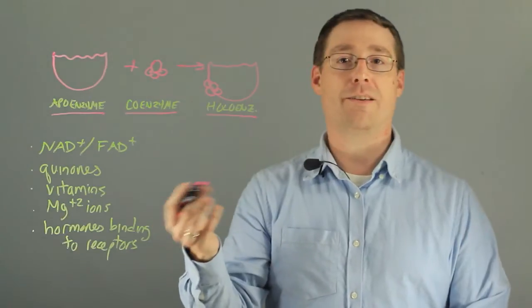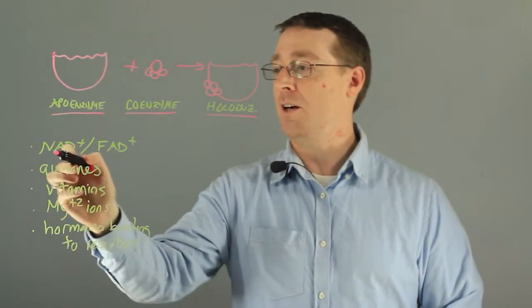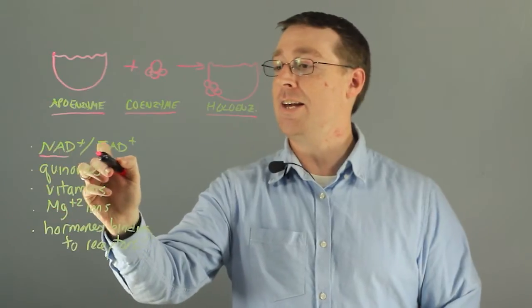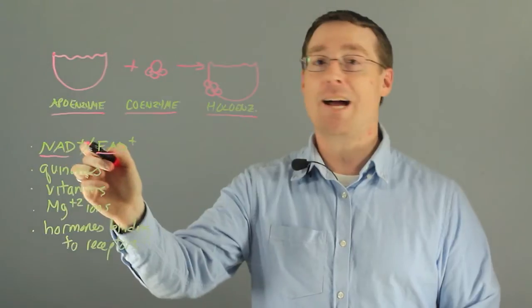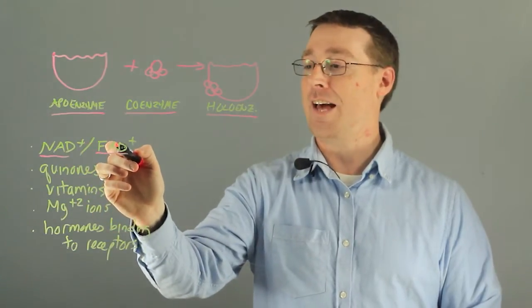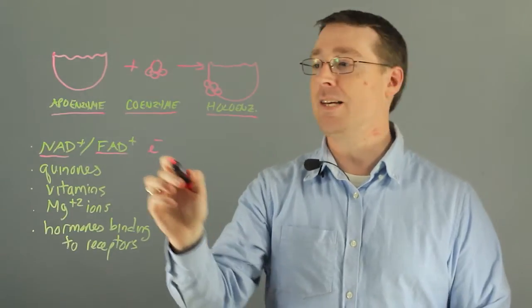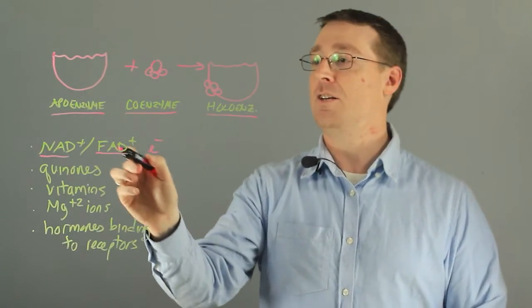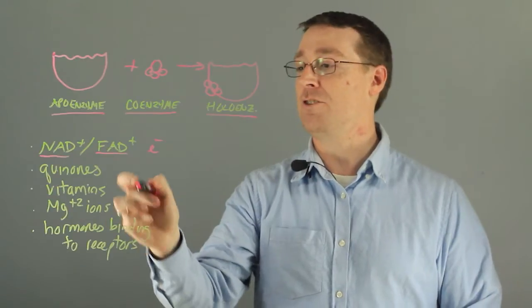Now, what are examples of coenzymes in biology? Well, they are the NAD and FAD, nicotinamide adenine dinucleotide and flavin adenine dinucleotide, which are involved in electron transport and get oxidized and reduced to facilitate enzyme-catalyzed reactions.